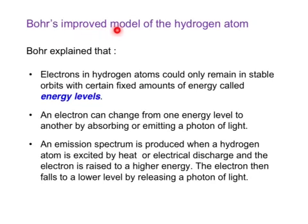Bohr's improved model of the hydrogen atom. He explained that electrons in hydrogen atoms could only remain in stable orbits with certain fixed amounts of energy. An electron can change from one energy level to another by absorbing or by emitting a photon of light, as we've seen before.